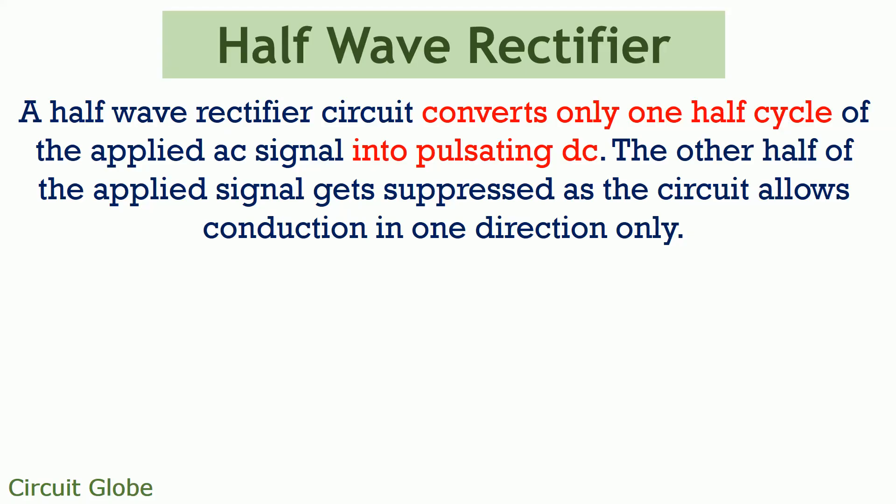A half wave rectifier can convert only one half cycle of the applied AC signal into pulsating DC. In case of a half wave rectifier, the other half of the applied AC signal gets suppressed as the circuit allows the conduction in one direction only. Basically, it converts the applied alternating voltage into unidirectional pulsating voltage by the use of only one half cycle.